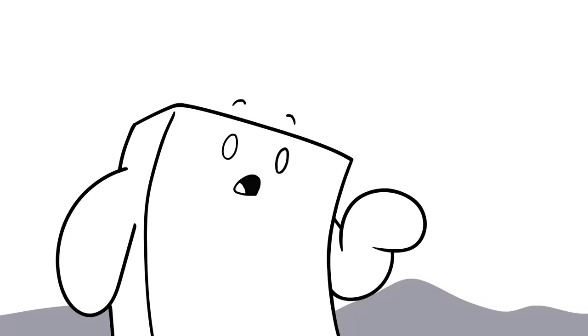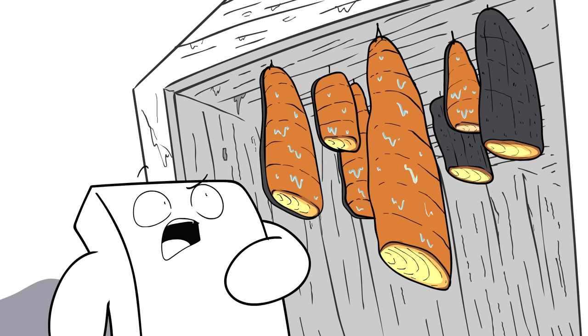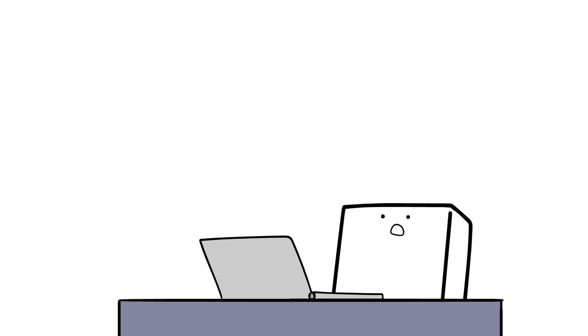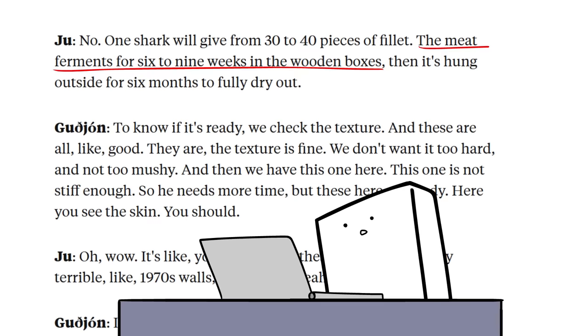So the way they get the toxins out and make the meat safe to eat is by letting it hang out in a cellar to rot for six months. Okay, well actually, according to this website, it ferments for six weeks first and then left out to dry for six months. And that's all there is to it.